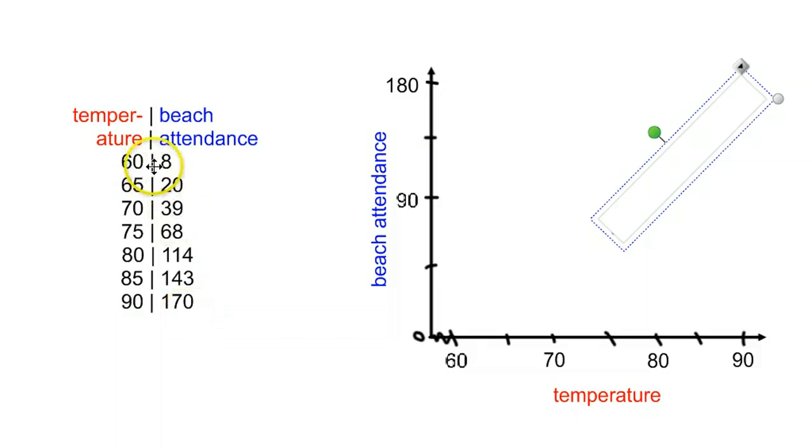And then you would plot a point for each one of these pairs of values. So if you're doing this by hand, it's pretty straightforward to just put a dot on a piece of graph paper, but generally we will use a computer.